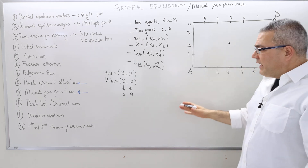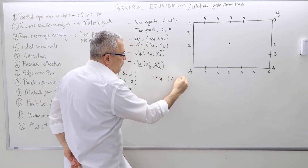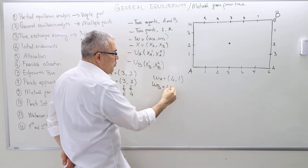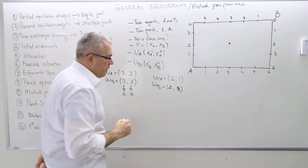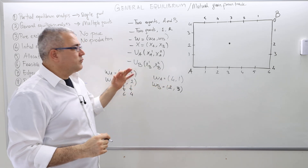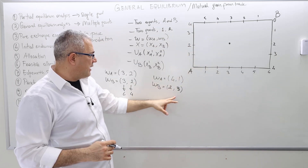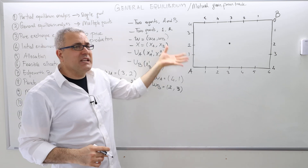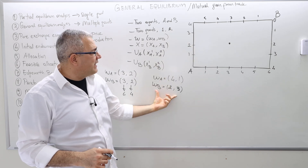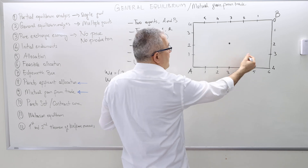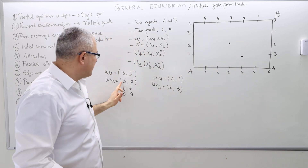If we had a different problem where agent A had, for example, four units of good one and one unit of good two, and agent B had two units of good two and three units of good two — as long as the totals are the same — the Edgeworth box would be exactly the same: six by four. The only difference would be the initial endowment point. This initial endowment point would be here rather than in the middle.